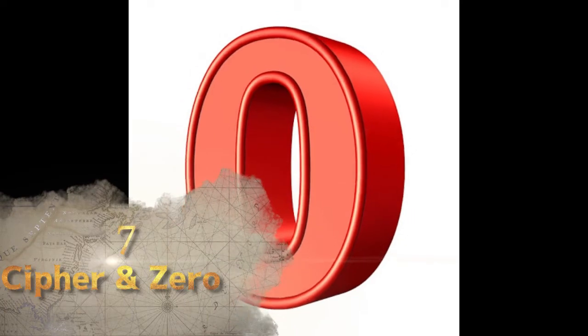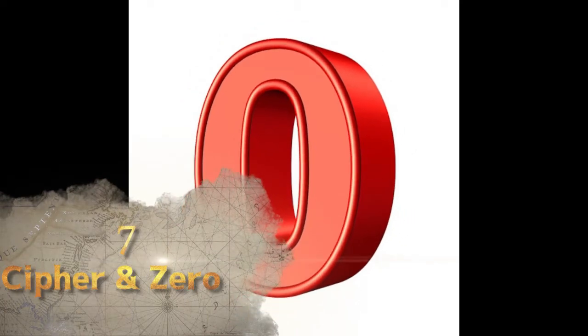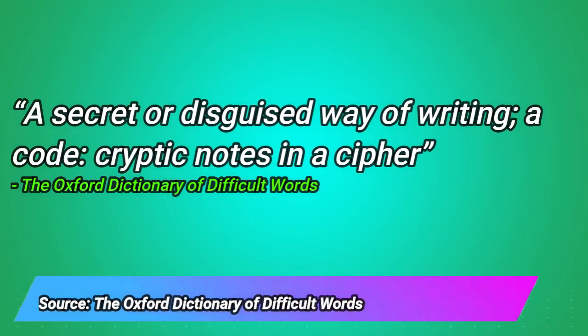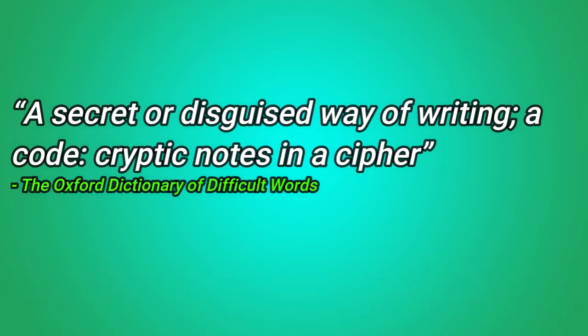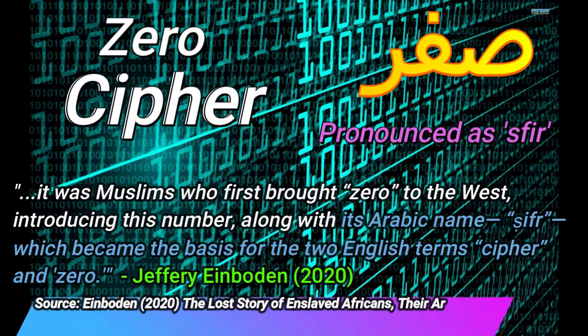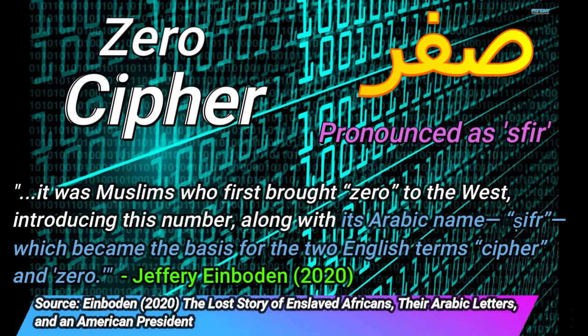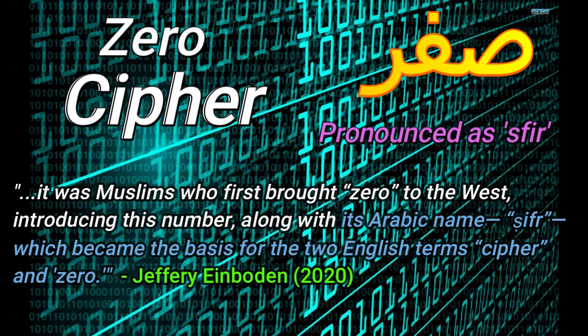Up next are two words: cipher and zero. The word zero is self-explanatory, but for those who haven't heard of the term cipher, the Oxford Dictionary defines it as a secret or disguised way of writing — a code — for example, 'cryptic notes in a cipher.' It could also mean zero. Today, the term is mostly used in computer programming and algorithms. Both terms come from the Arabic word sifar, which according to Joseph W. Mary was the Arabic term meaning 'empty place,' which Muslim mathematicians took to mean zero — a number which they took from the Indian mathematicians.